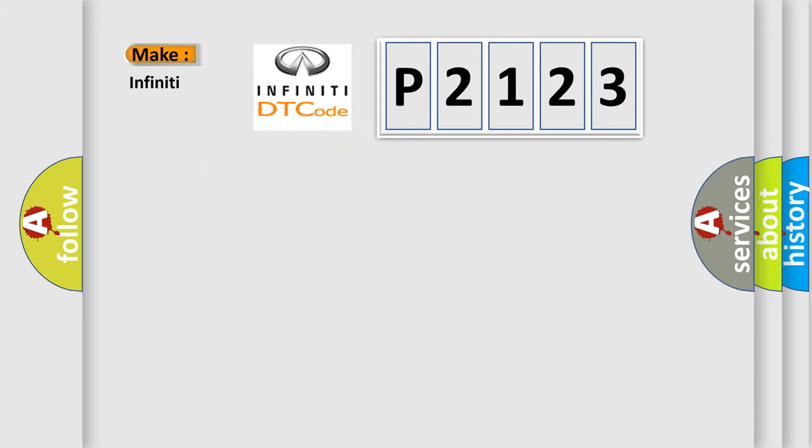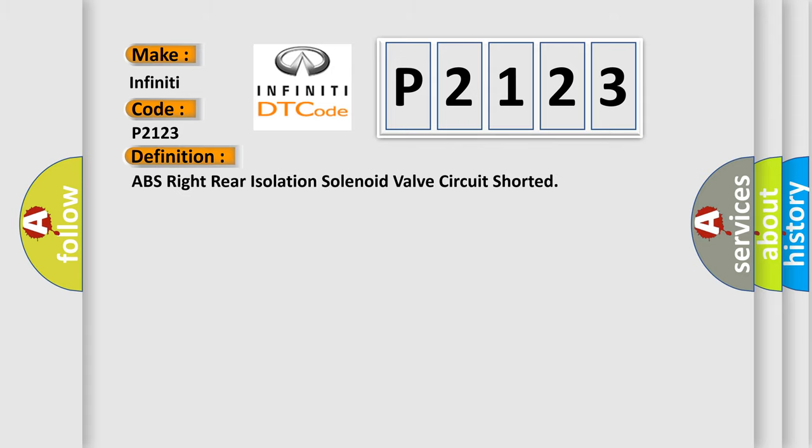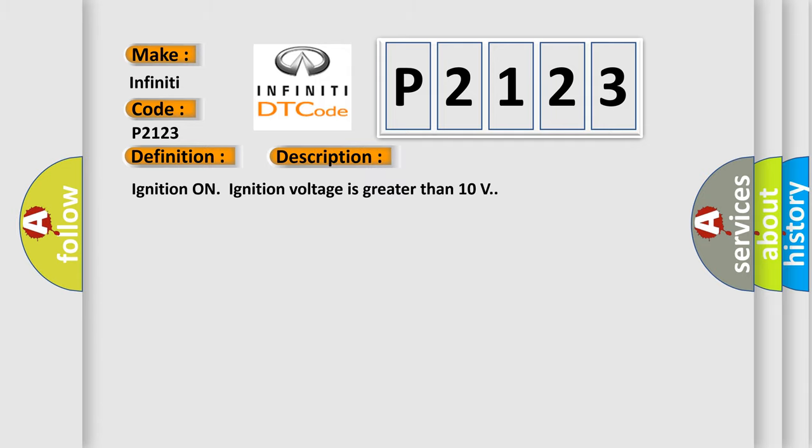So, what does the diagnostic trouble code P2123 interpret specifically for Infiniti car manufacturers? The basic definition is: Ignition ON, ignition voltage is greater than 10 volts.